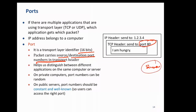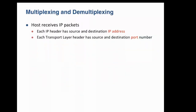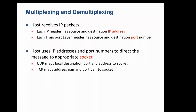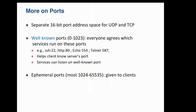These well-known ports are defined by IETF and don't change. Well-known ports range from 0 to 1023: for example, SSH is port 22, HTTP is port 80, Telnet is port 587, and so on. There is a list at the end of this presentation. Services can listen on these well-known ports — for example, an HTTP process listens for incoming packets on port 80.